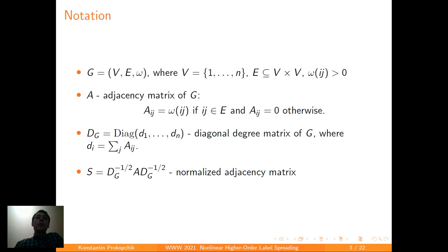Here we'll provide you with some basic notation. G is a graph, A is an adjacency matrix, and D is a diagonal degree matrix of the graph. And we'll also introduce S as a normalized adjacency matrix here.